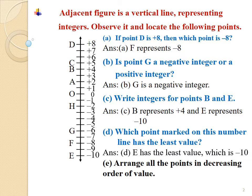Sub-question e: Arrange all the points in decreasing order. Decreasing order means descending order, where we arrange from the largest value to the smallest value. Note that we have to write the points — that is, the letters of the English alphabet given to us — and not the integers like 8, 7, 6, 5, 4, 3, 2, 1, 0, minus 1, minus 2, minus 3, minus 4, minus 5, minus 6, minus 7, minus 8, minus 9, and minus 10.